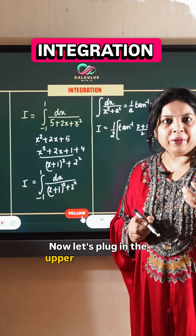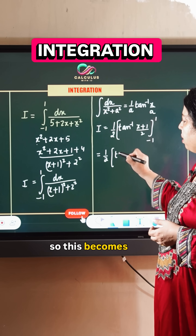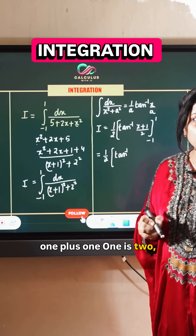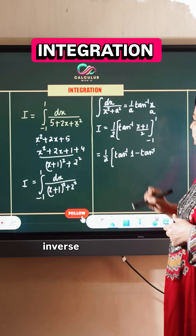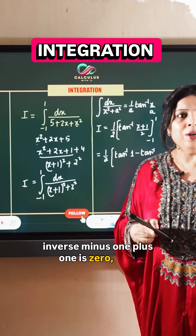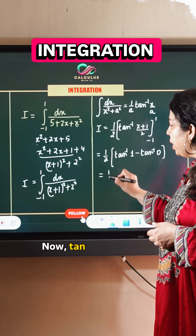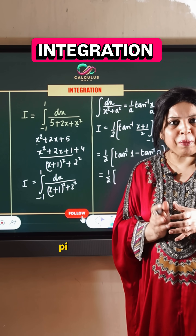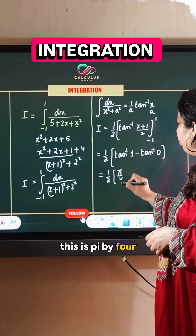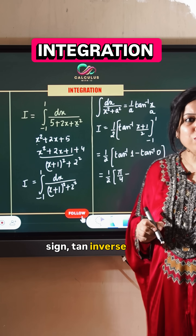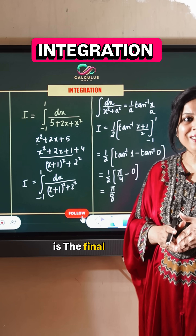Now we plug in the upper and lower limits. For the upper limit: tan inverse of 2 divided by 2, which is tan inverse 1. For the lower limit: tan inverse of 0 divided by 2, which is tan inverse 0. Since tan inverse 1 equals pi by 4 and tan inverse 0 equals 0, the result is 1 over 2 times pi over 4 minus 0, giving a final answer of pi divided by 8.